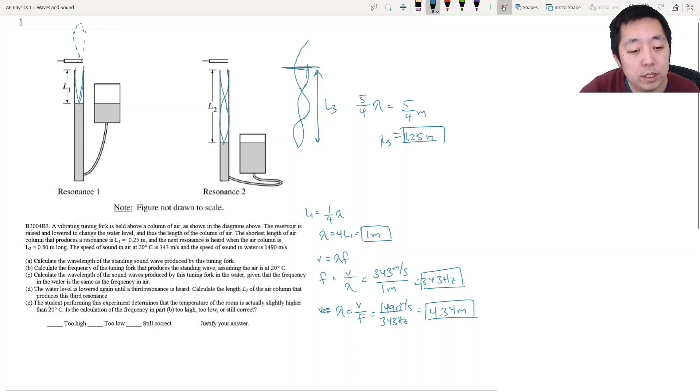The student performing this experiment determines that the temperature of the room is slightly higher than 20 Celsius. Is the calculation of the frequency too high, too low, or still correct? Ooh, this is a fact I don't remember off the top of my head, and I might have to look it up. What is the temperature dependency of sound in air? Oh, velocity, sorry, the velocity. The question is if the speed would change when the air is warmer. I'm going to have to look up this fact. This is just sort of a fact you just kind of have to know. Speed of air, temperature dependence.